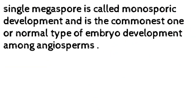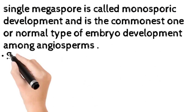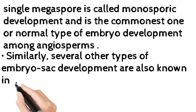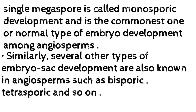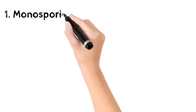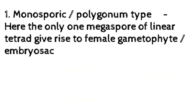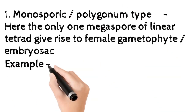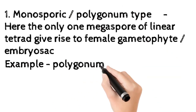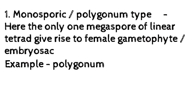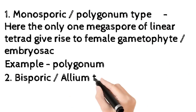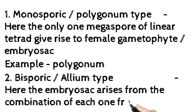Monosporic development is the commonest or normal type of embryo sac development among angiosperms. Several other types are also known, such as bisporic, tetrasporic, and so on. Type 1 — Monosporic or Polygonum type: here only one megaspore of the linear tetrad gives rise to the female gametophyte (embryo sac). Example: Polygonum. Type 2 — Bisporic or Allium type: the embryo sac arises from a combination, one from each of the two cells (dyad) formed after meiosis.